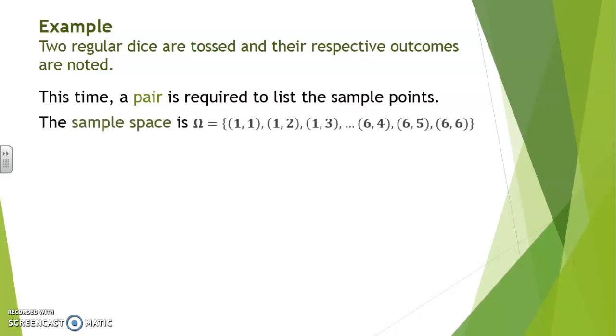So the sample space is now formed of the possible outcomes (1,1), (1,2), (1,3), etc. And eventually we would get to a scenario with (6,4), (6,5), (6,6).